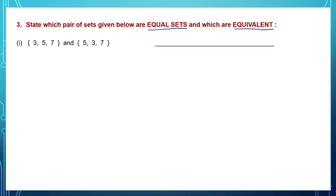Question 1: let's look for the elements in both these sets. I have 3 and 3, 5 and 5, 7 and 7 — so the elements are the same. These are equal sets. They are also equivalent because they have the same number of elements — there are 3 in each set.